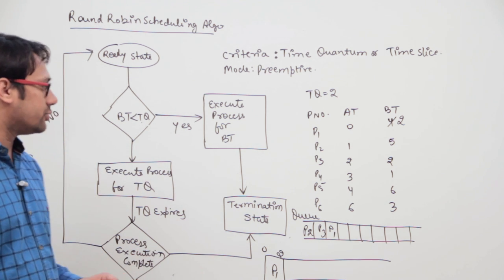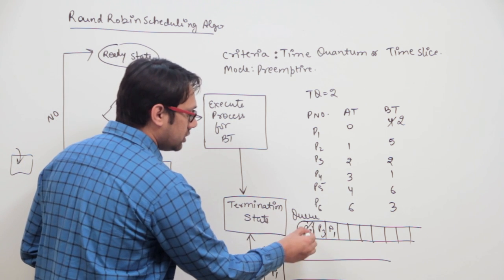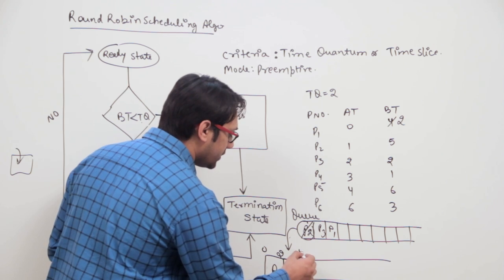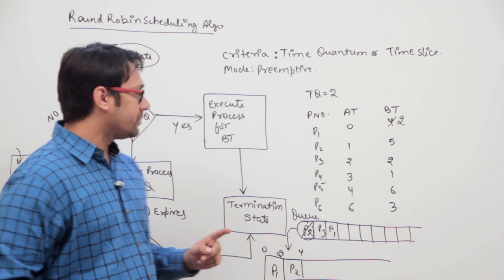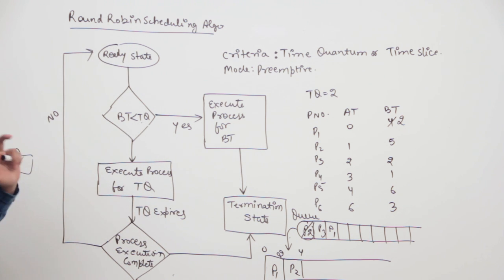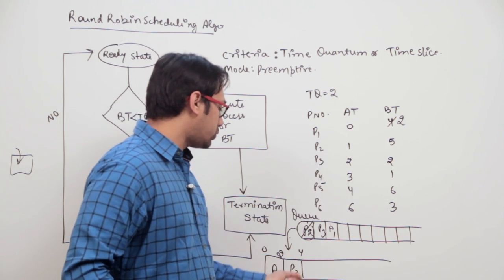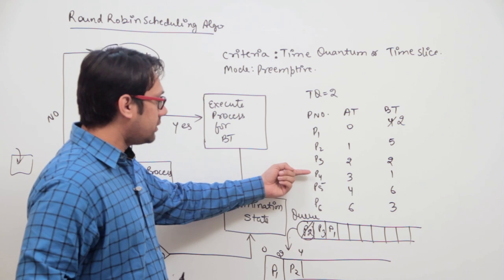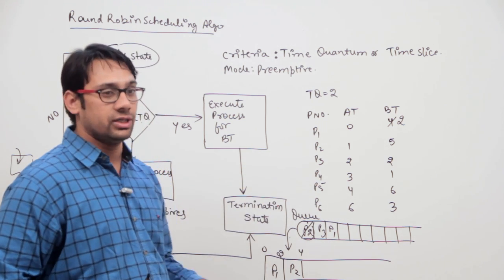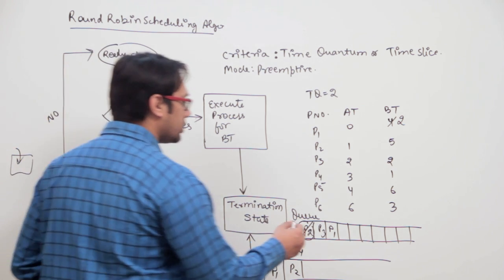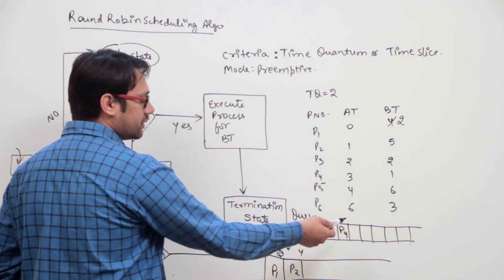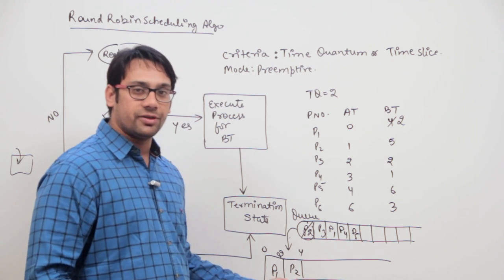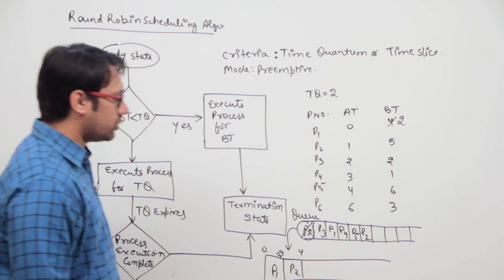We take process P2 out of the queue and execute it for the time quantum, that is till time unit 4. The burst time of P2 is 5, which is not less than the time quantum, so we execute P2 for two units of time. By time unit 4, new processes P4 and P5 have arrived — P4 has burst time 3 and P5 has burst time 4. We put P4 and P5 in the ready queue. At time 4, P2 finishes its time quantum and goes back to the ready queue, now requiring 3 more units of burst time.